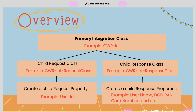To summarize so far: we created a primary integration class, and under it two child classes — one for request and one for response. For the request class we created a request property, and for the response class we created response properties.